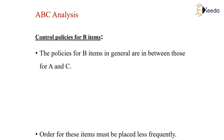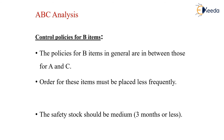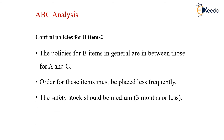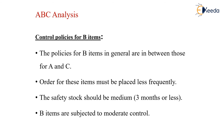For B items, the policies are generally in between those for A and C. Orders for these items must be placed less frequently, the safety stock should be medium — three months or less — and B items are subjected to moderate control.